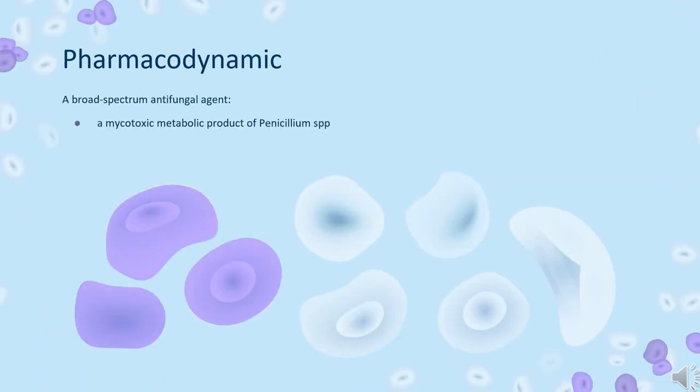Pharmacodynamics. Griseofulvin is a mycotoxic metabolic product of Penicillium SPP. It was the first available oral agent for the treatment of dermatophytosis and has now been used for more than 40 years. Griseofulvin is fungistatic with in vitro activity against various species of Microsporum, Epidermophyton, and Trichophyton. It has no effect on bacteria or on other genera of fungi. Following oral administration, Griseofulvin is deposited in the keratin precursor cells and has a greater affinity for diseased tissue.